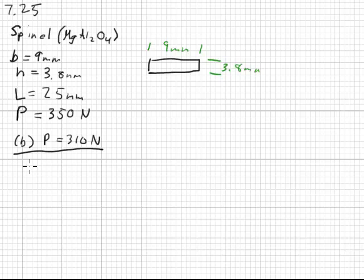Now, in strength of materials, we learn that stress is equal to the moment times C, which is the distance from the neutral axis to the outermost fiber. In this case, C will be from the centroid here, in the direction of loading to the outermost fiber. So it's half of this 3.8 millimeters, so it's 1.9 millimeters equals C.